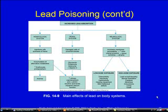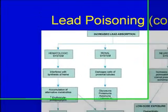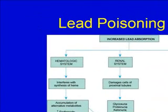Lead also interferes with the renal system. It damages the cells and causes glucosuria, proteinuria, and ketonuria. It changes calcium absorption, which is also related to vitamin D, and you end up with renal problems. Then there's the neurologic system.